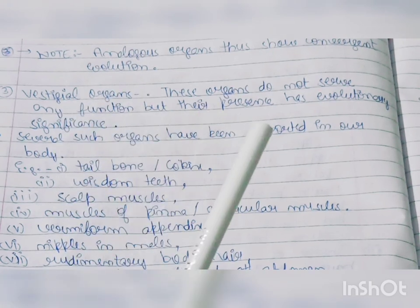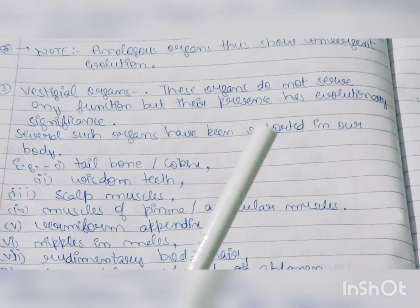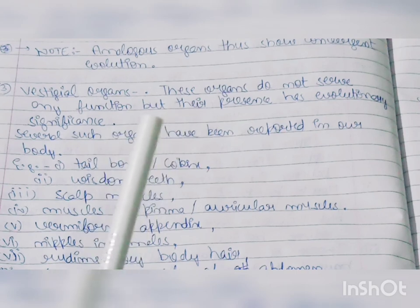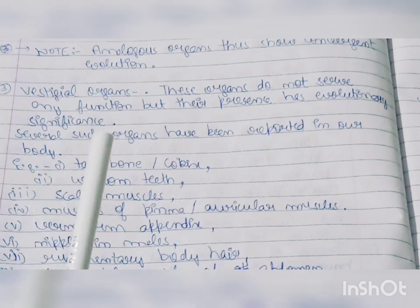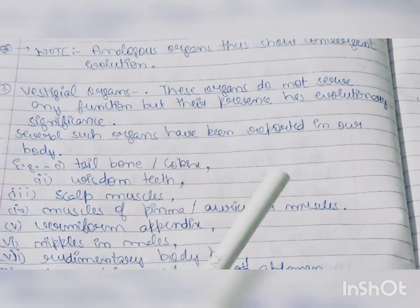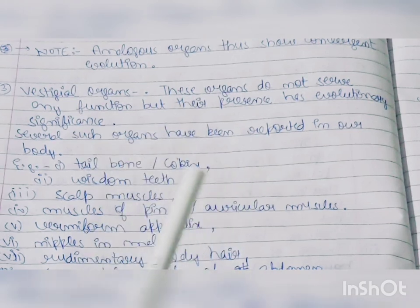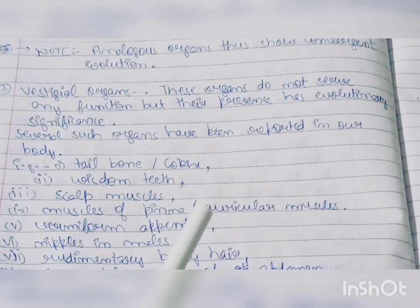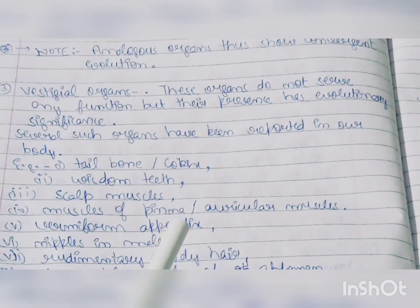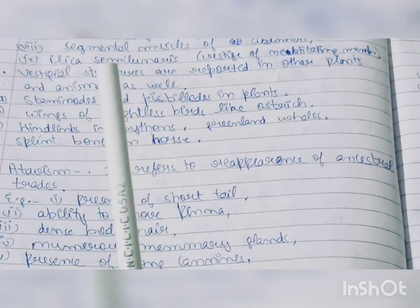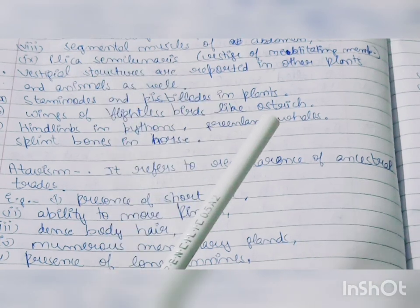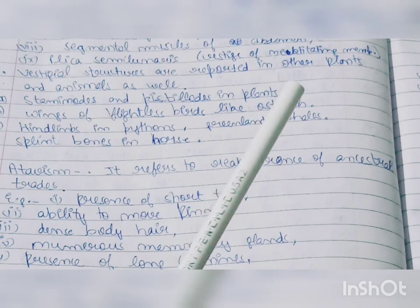The third type is vestigial organs. These organs serve no function, but their presence has evolutionary significance. For example in humans: tailbone, wisdom teeth, scalp muscles, muscle of pinna, vermiform appendix, nipples in males, rudimentary body hair, segmental muscles of abdomen, and plica semilunaris — which is the vestige of the nictitating membrane.